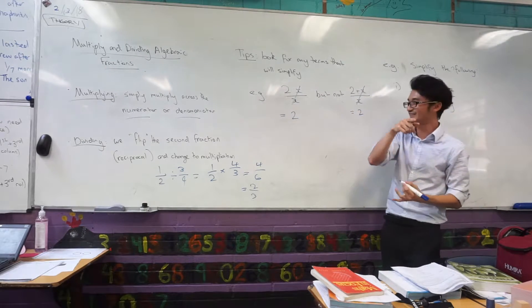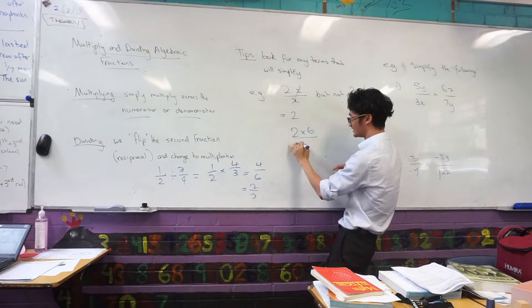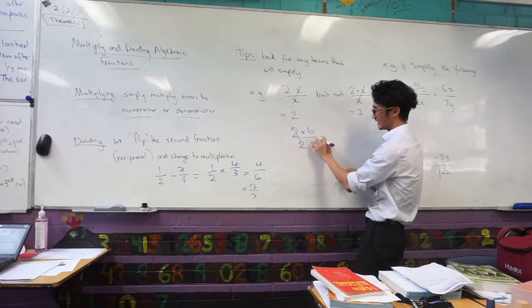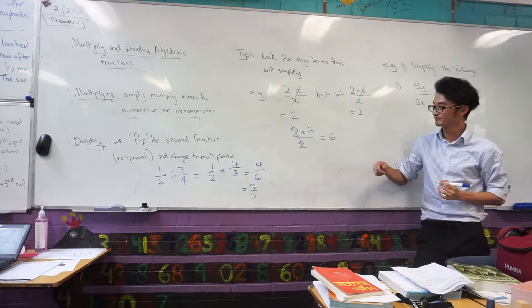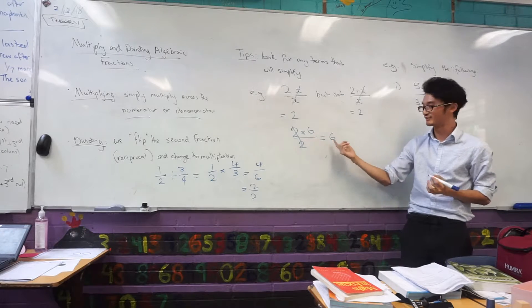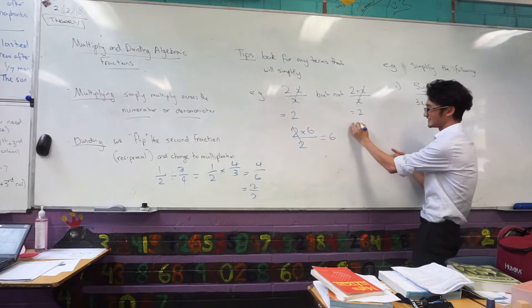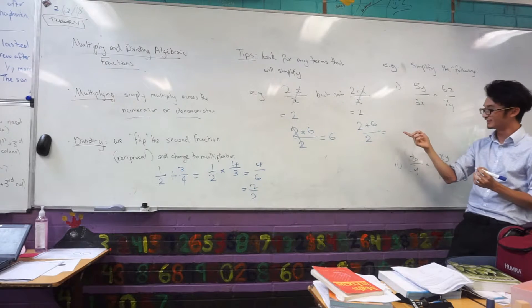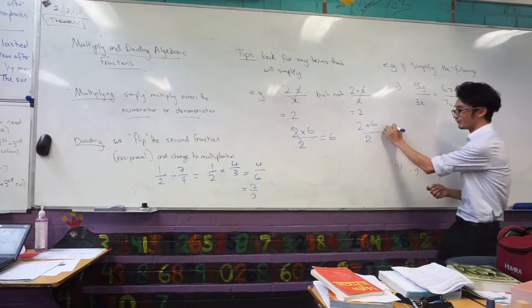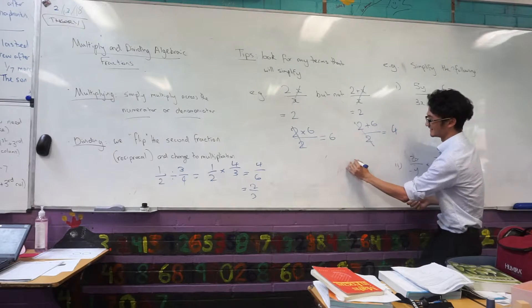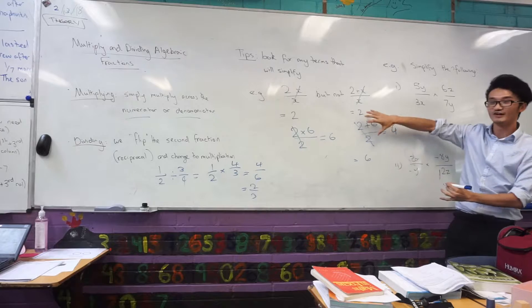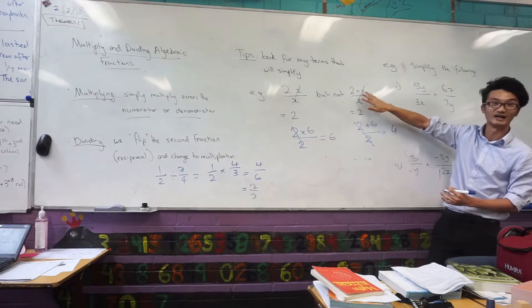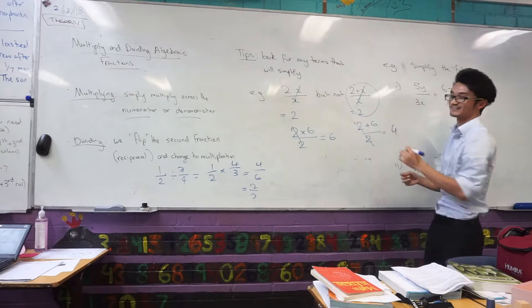Let me show you why that doesn't work. For example, if I take this example, 2 times 6 on 2, I know I can divide these 2's out, and that would give me 6. And that works out, because 12 divided by 2 is also 6. But if I look at this example, 2 plus 6 over 2, what would you expect the answer to be? It should be 4. If you did this, you just end up with 6. So if there's additions here, if there's an addition, you can't actually do that. This does not work. Do not do that.